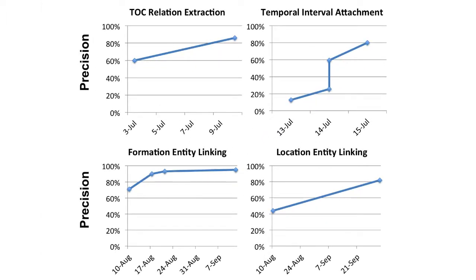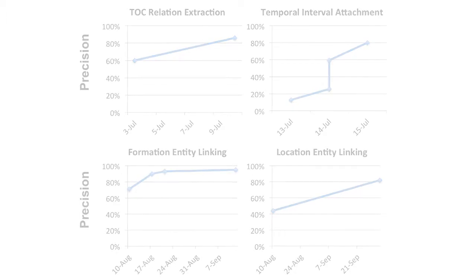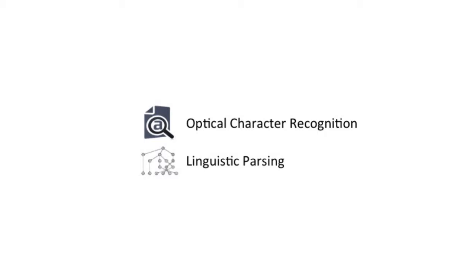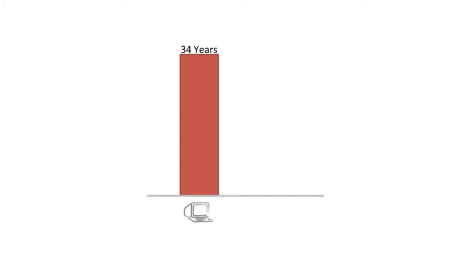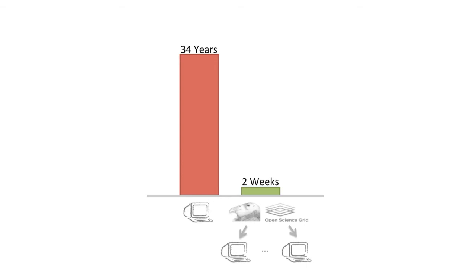We continue to improve several different relations and hope to have a public demo soon. GeoDeepDive uses Condor to scale up computationally expensive tasks, for example OCR and linguistic parsing. Running OCR on the 40,000 geoscience journal articles would require over 300,000 machine hours. On a single machine, this would take over 34 years. Fortunately, GeoDeepDive is able to leverage Condor. Condor enables us to distribute the OCR tasks to thousands of machines on the National Open Science Grid. As a result, OCR took us only two weeks. Thanks, Condor!